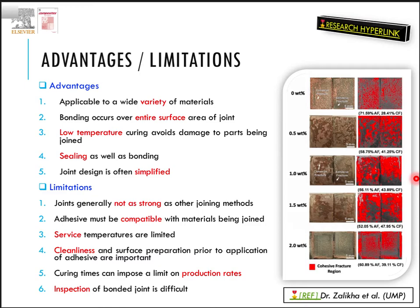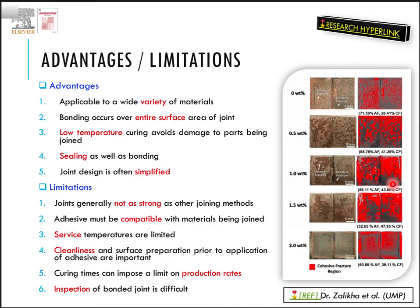The highest joint strength was achieved at one weight percent of alumina nanoparticles in the epoxy composite, contributing to around 52.4% improvement in tensile shear strength. The red marks in the images show cohesive failure — the more cohesive failure, the stronger the adhesive. That is why at one weight percent we see the highest amount of cohesive failure versus adhesive failure. Cohesive failure is preferred in adhesive bonding. This research was carried out by a UMP researcher and a link has been provided.